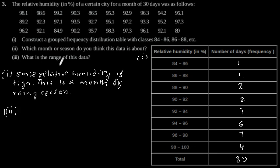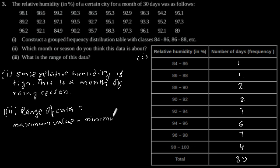Third: What is the range of this data? Range of data equals maximum value minus minimum value. Now, from the data we can observe that the maximum value is 99.2 and minimum value is 84.9. This will give us 14.3, which is our range of data.